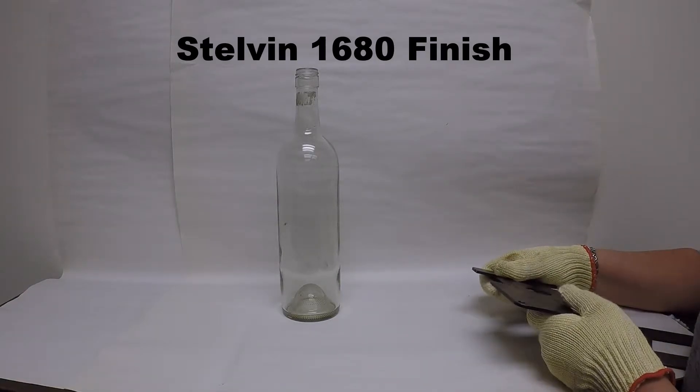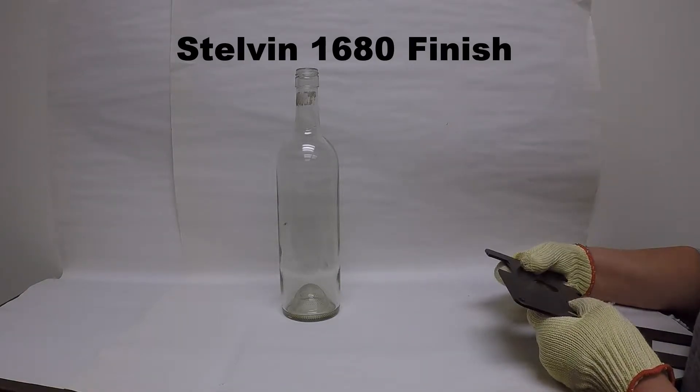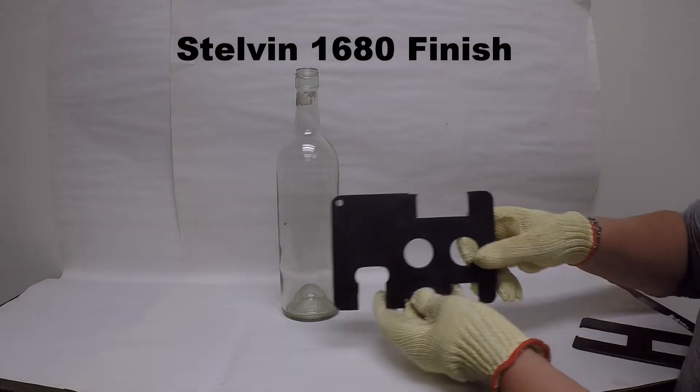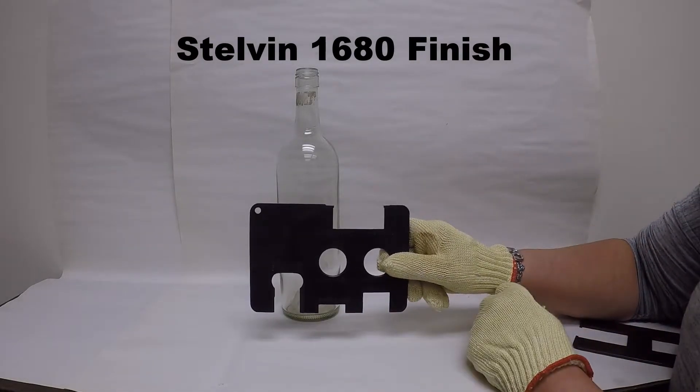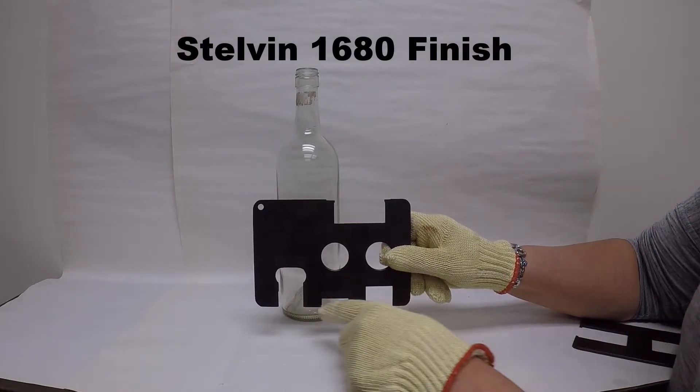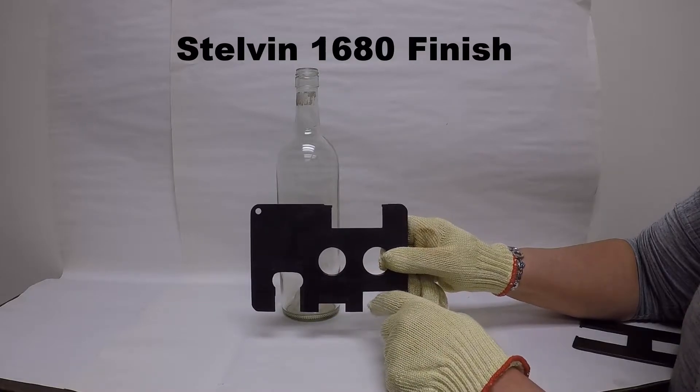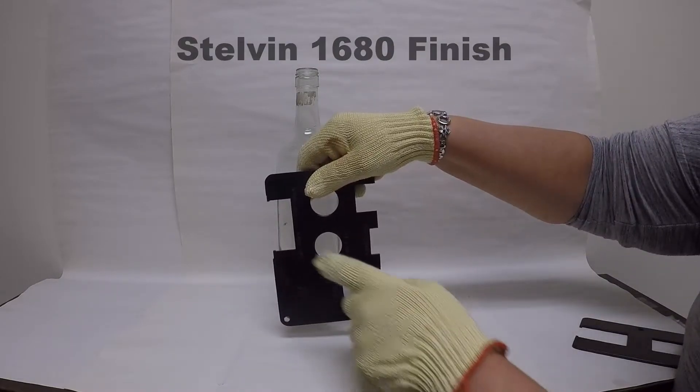This is an instructional video on how to gauge a Stelvin 1680 finish. We're going to be using a combo gauge that measures the E min and max, the T min and max, the A min and max, and the D min and max.